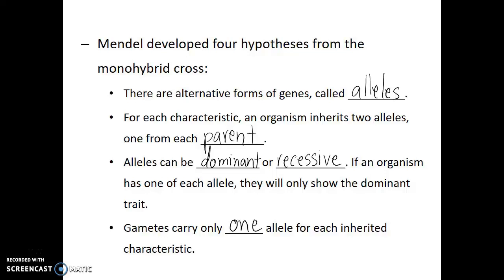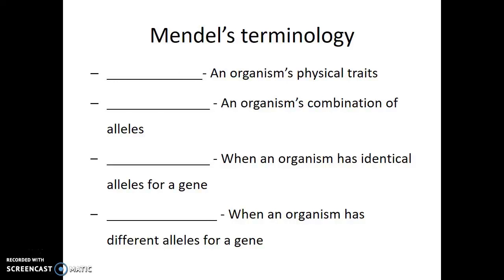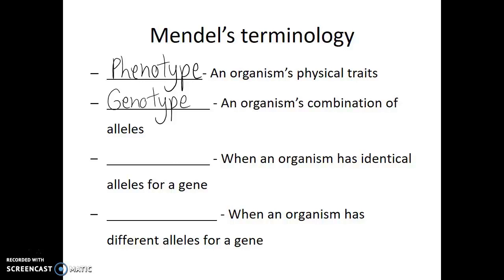There are a few terms to introduce before we see how these hypotheses led Gregor Mendel to his conclusion — what we now know as the law of segregation. The phenotype of an organism is the description of its physical traits and characteristics. If a pea plant has purple flowers, that is its phenotype. If it has white flowers, that is its phenotype. Whether it's tall or short, yellow seeds or green seeds — those are all examples of phenotype. In contrast, the genotype of an organism specifically states which alleles that organism has. If an individual has two copies of the dominant purple flower color allele, that is an example of genotype.